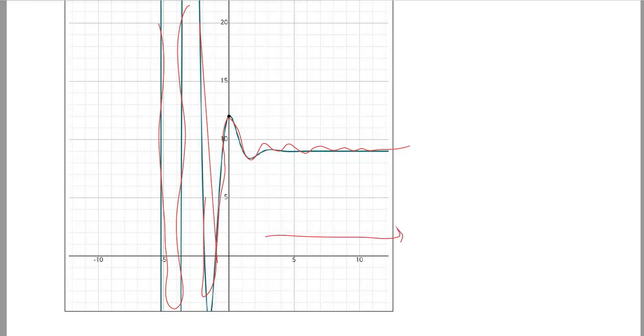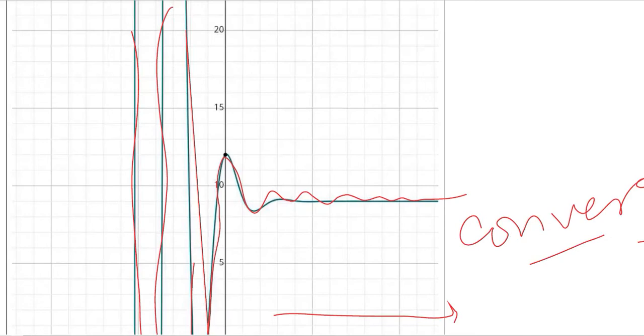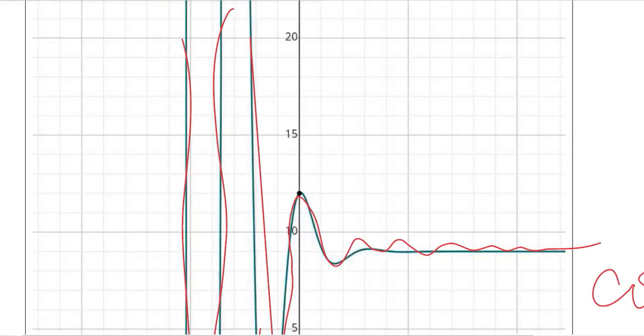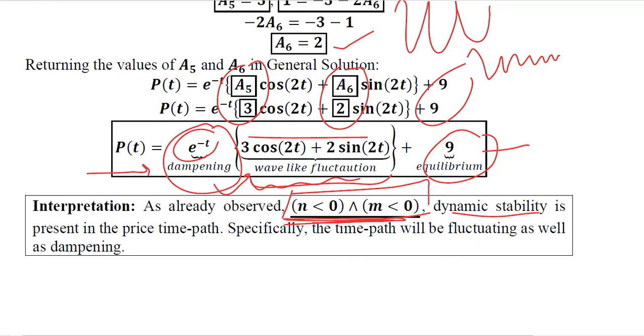So it is likely to converge to the equilibrium which is a desired situation in case of a time path. So this case is actually representing a situation where we have stability and the dampening effect happening to the wave-like motion that is due to the trigonometric ratios that we have found in our time path.